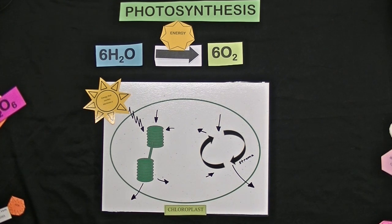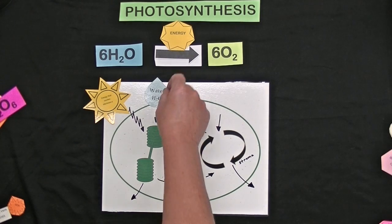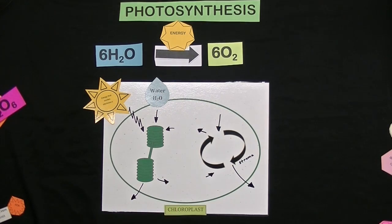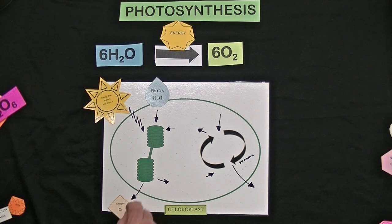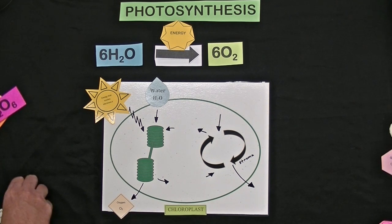The first reactant in photosynthesis is water. Water gets split into oxygen and it gets split into hydrogen.